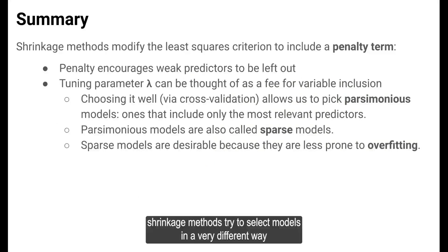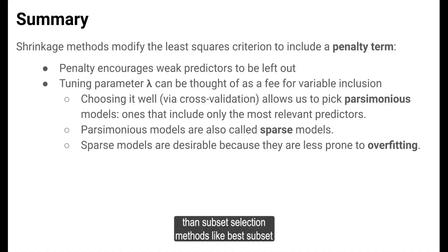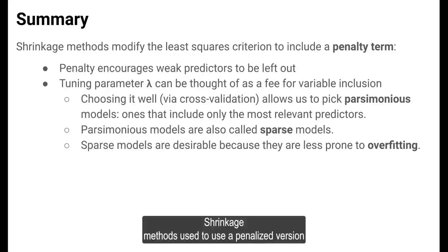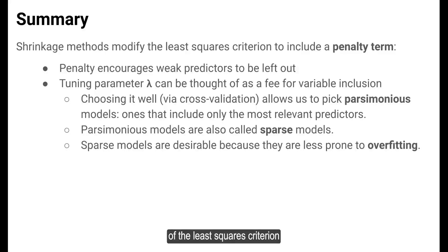In summary, shrinkage methods try to select models in a very different way than subset selection methods like best subset and stepwise methods. Shrinkage methods use a penalized version of the least squares criterion that mathematically encourages weak predictors to be left out of the model.